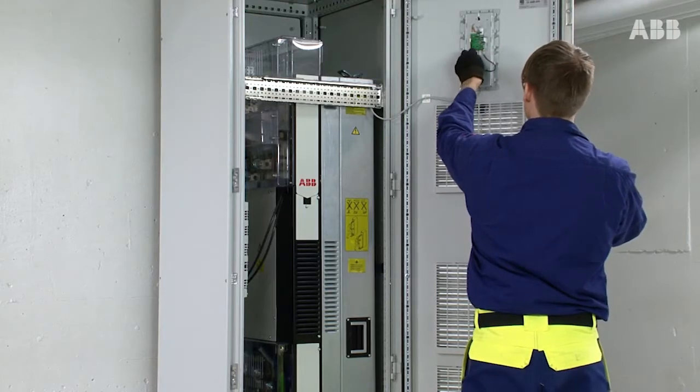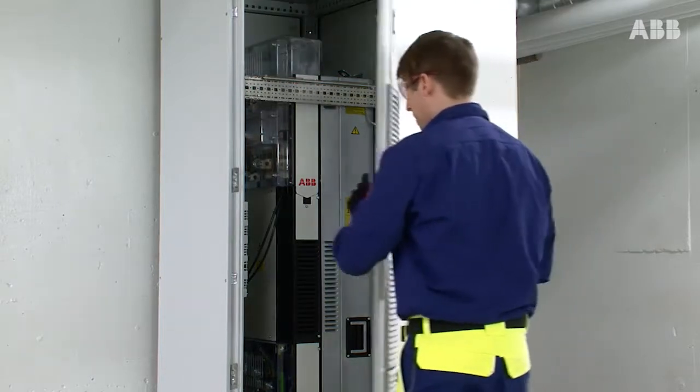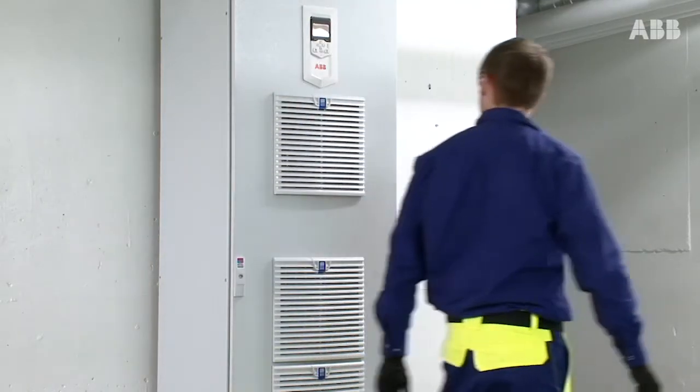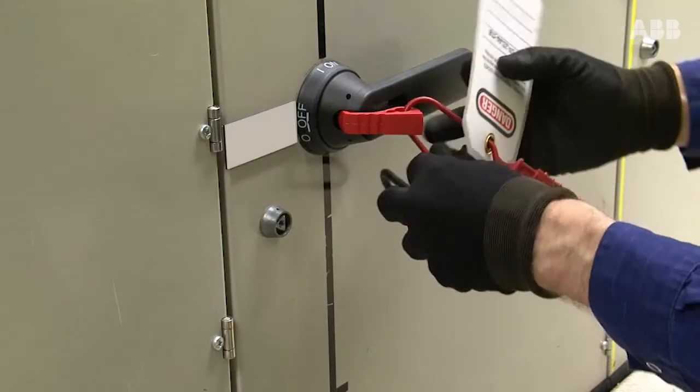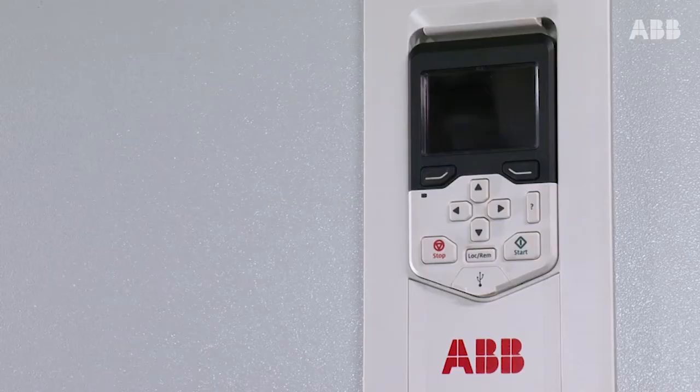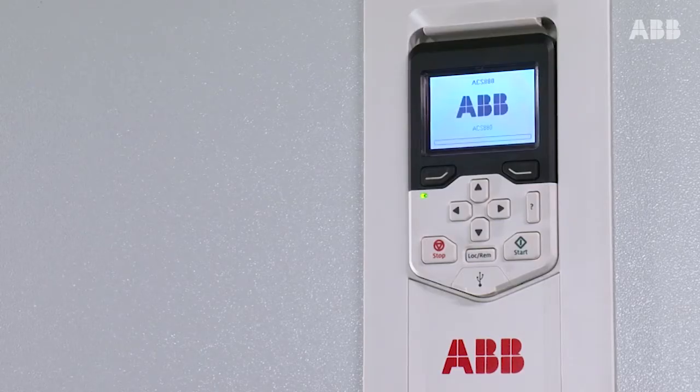Finalize the cabinet assembly by connecting the control cables. After this, the connection of the cables to the drive module is completed. Open the lock securing the disconnection and switch on the electricity. Now the module is ready for commissioning.